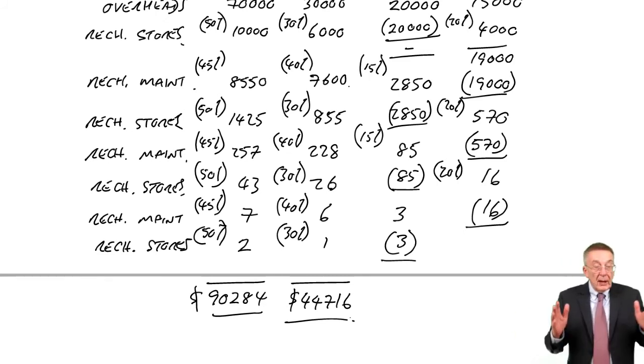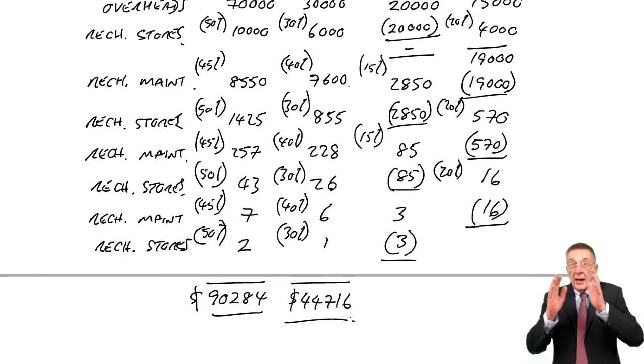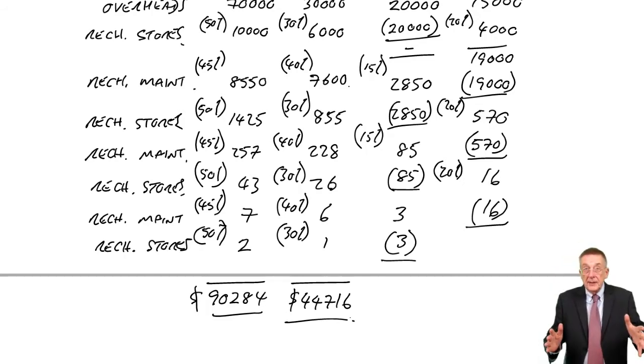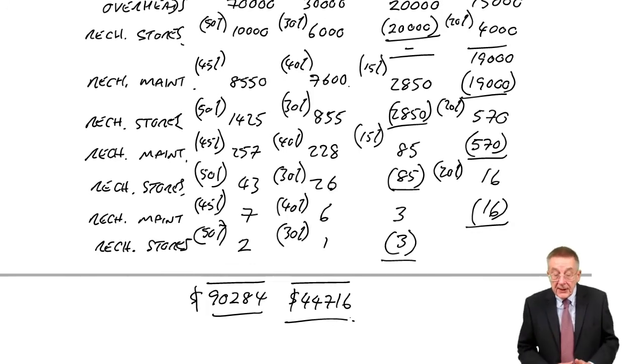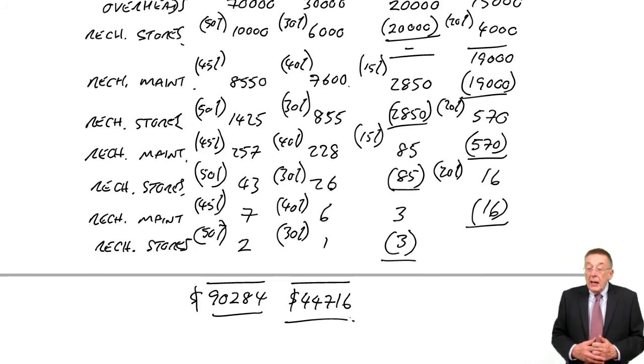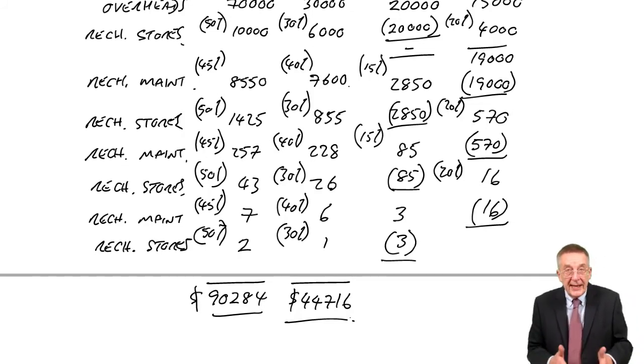So see what's happened. We take our overheads, we allocate and apportion them between all the departments. We did it in example 4. In example 6, it had been done for us, the first four figures. Any service departments, we recharge. If there's only one, it's nice and easy as in example 5. If there's more than one and they're doing work for each other, then it means this backwards, forwards business. And don't worry, if you get this in the exam, there will only be two service departments.